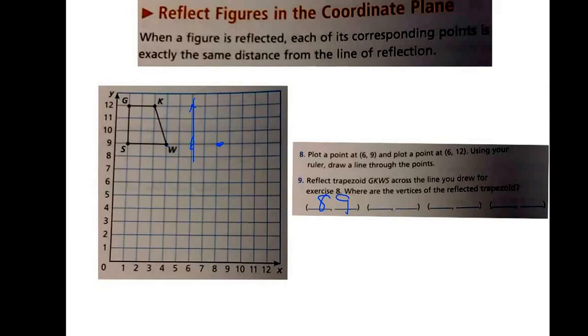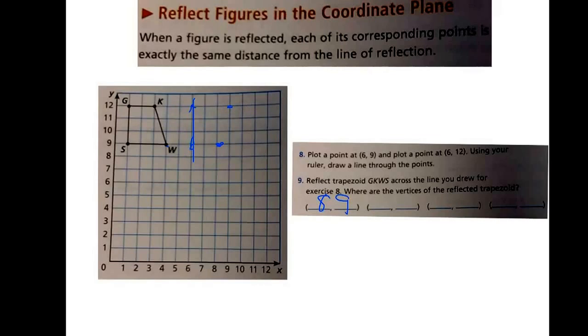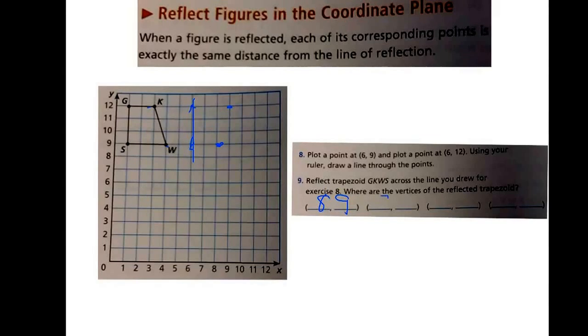Okay, now I'm going to look at K. Notice K is three squares away, so I'm going to go to the right, three squares, again, and put my dot there. Three squares away to the line, and three squares this way, which would put me in the ordered pair 9, 12.